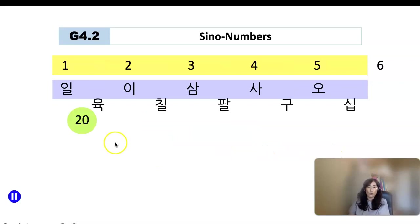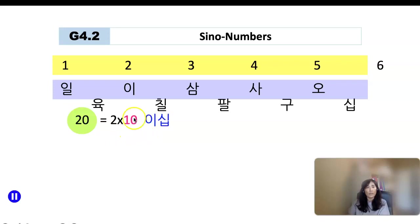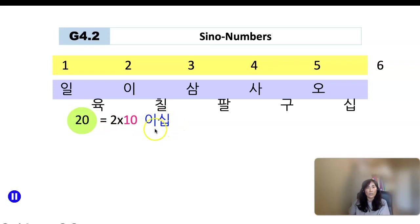How about number 20? Number 20 is 2 times 10. So you say the digit for 2, which is 이, and then 십 is the unit name for 10. So 20 is 이십.